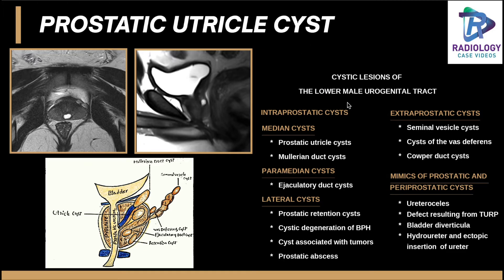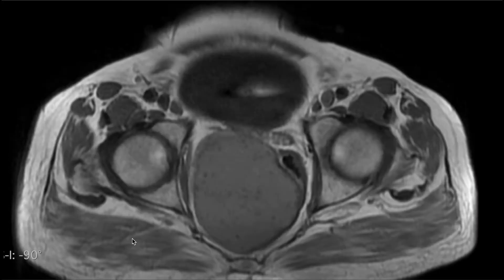Cystic lesions of the lower male urogenital tract can be broadly divided into intraprostatic and extraprostatic cysts. Prostatic cysts are classified into median and one of the most common paramedian types — ejaculatory duct cysts. Extraprostatic cysts can be seen in seminal vesicles and may be associated with ADPKD. This graphic illustration shows the classical Müllerian duct cyst appearance, while the utricle cyst, as in our case, is in the midline. Ejaculatory ducts are more paramedian and lateral on axial cuts. Retention cysts and cysts due to BPH can also be seen.